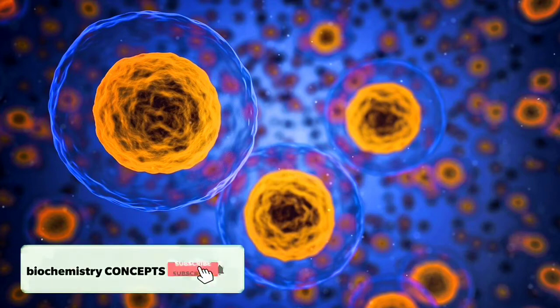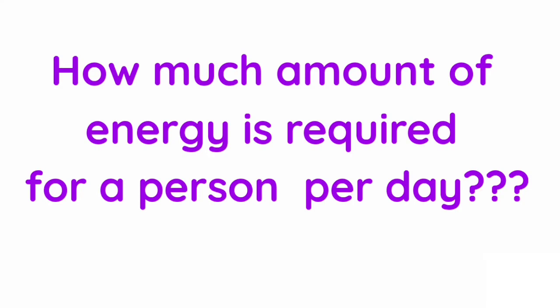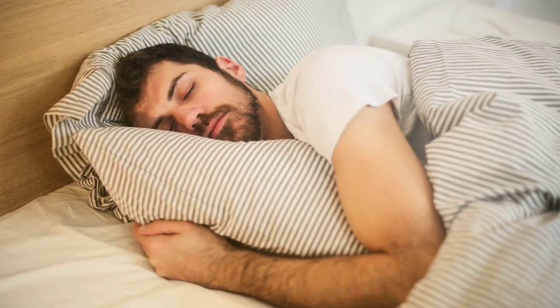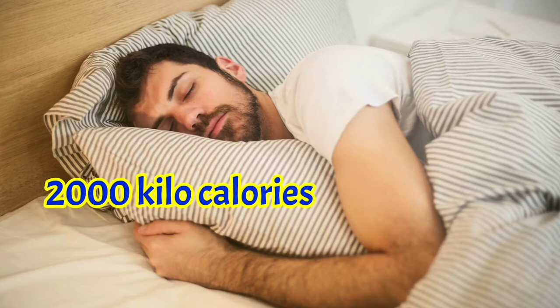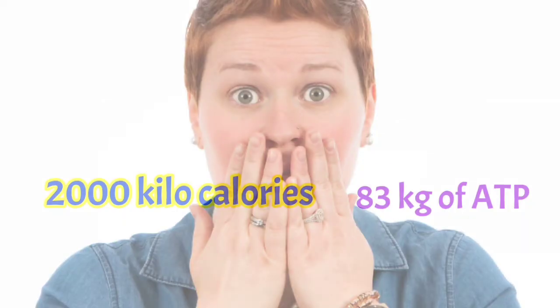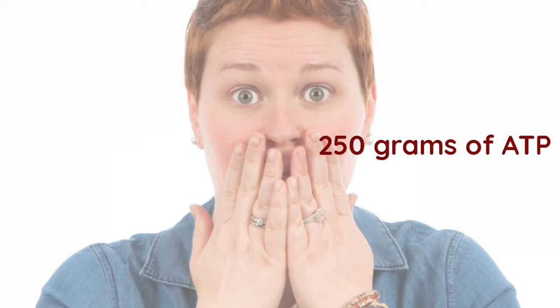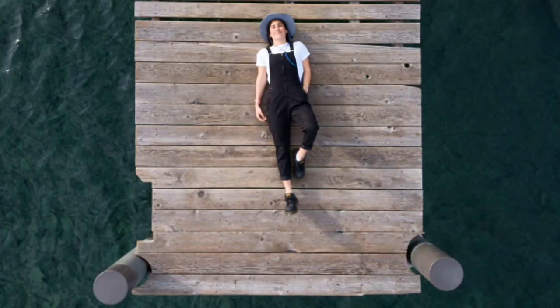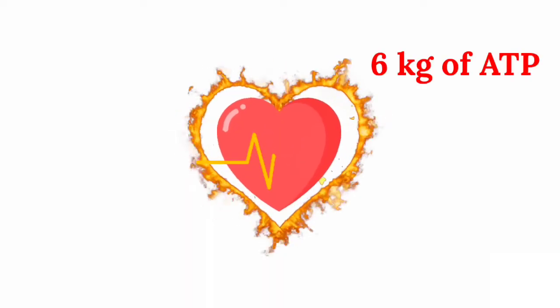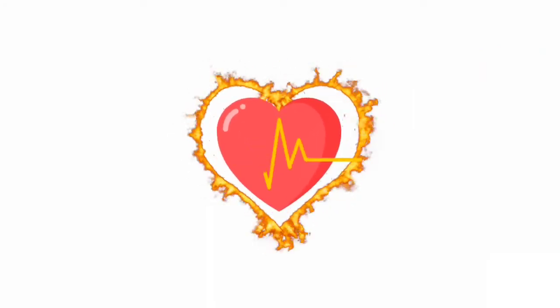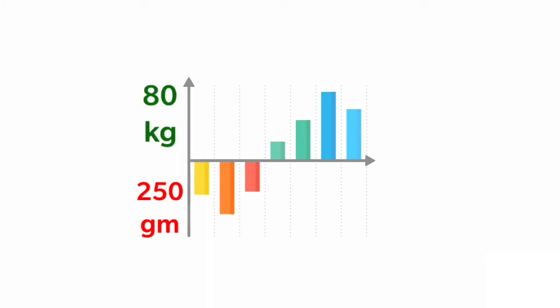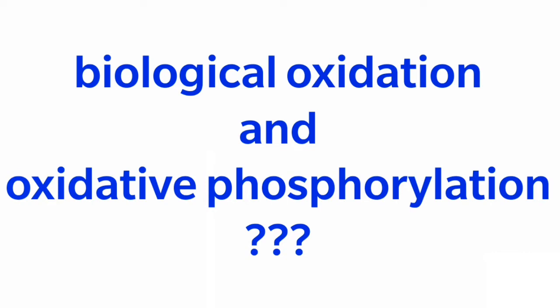Before going into details of biological oxidation and the electron transport chain, let us consider how much ATP is required for a person per day. A sedentary male of 70 kg requires approximately 2000 kilocalories per day. To provide this energy, 83 kg of ATP is required. However, human beings have only 250 grams of ATP at any moment. Running for two hours requires 60 kg of ATP; even at rest, a person requires 40 kg of ATP, and the heart alone requires 6 kg of ATP per day. So how is this large difference compensated? To understand this, we need to know what biological oxidation and oxidative phosphorylation are.